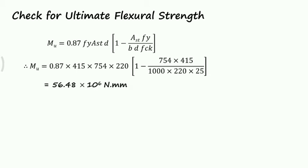1 minus 754 times 415 divided by 1000 times 220 times 25. We get MU as 56.48 kNm which is the resisting moment and the applied moment is 53.3 kNm which is less than this value, so the slab is safe in flexure.